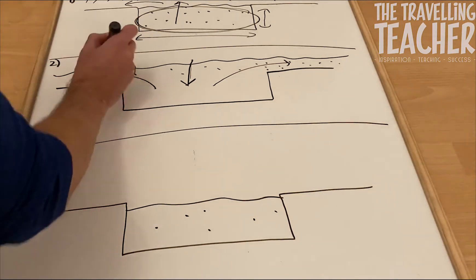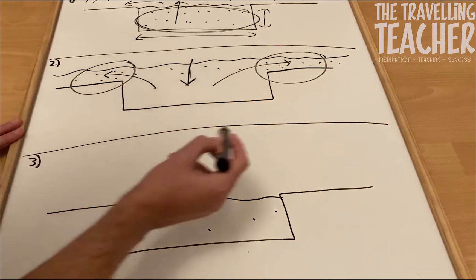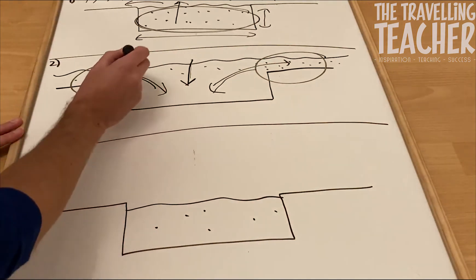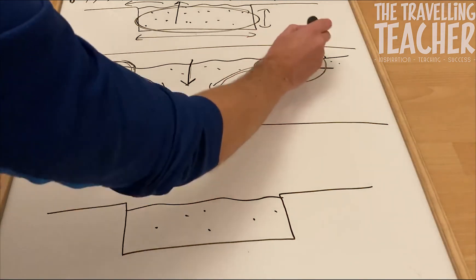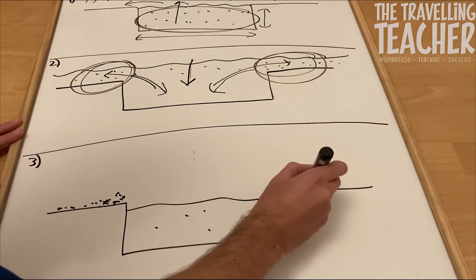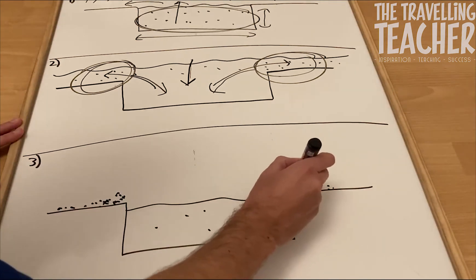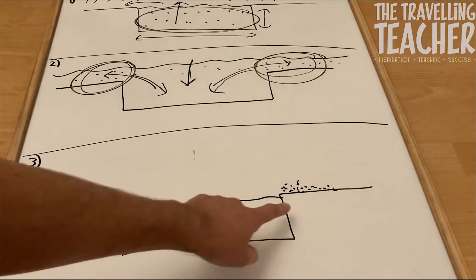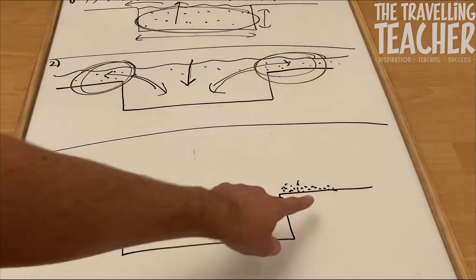Now, this sediment up here, here and here, when the water levels returned to normal, this sediment was deposited. It was dropped and it was left on top of the flood plain, just built up there. So you can see that the deposited, dropped sediment is on either side of the river channel.